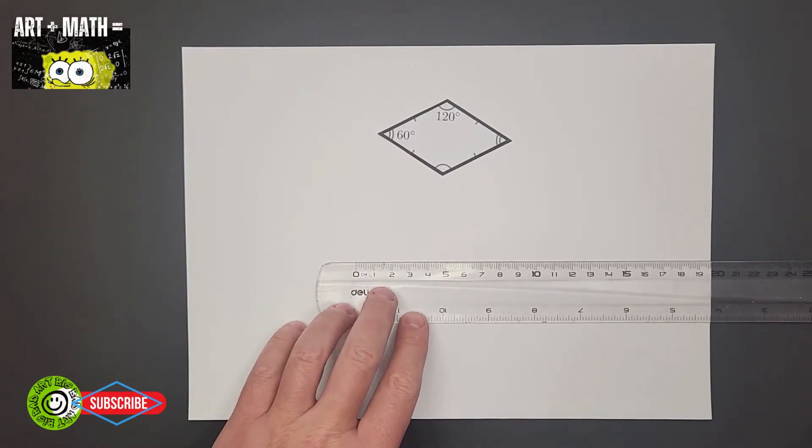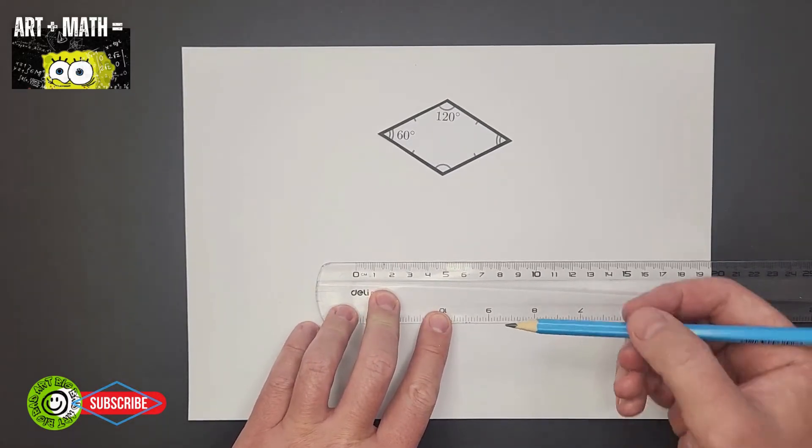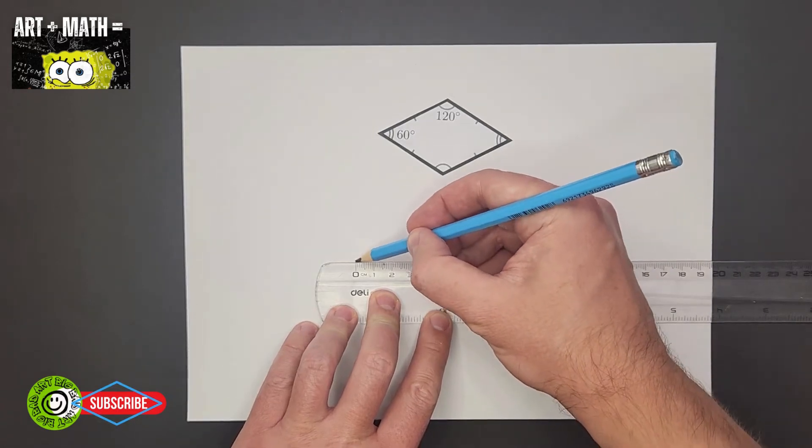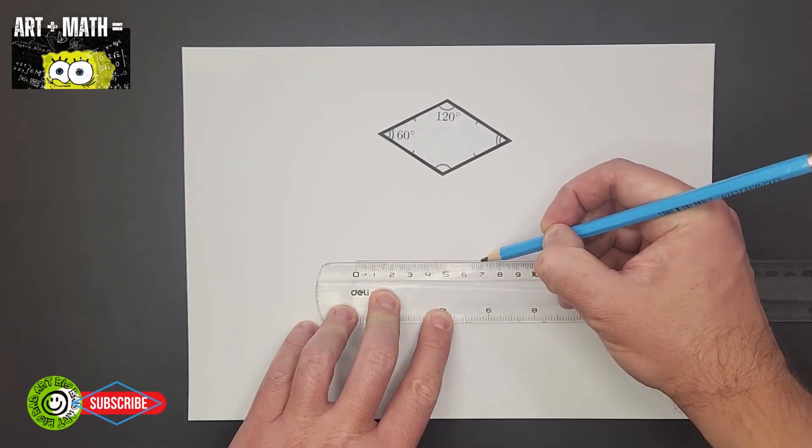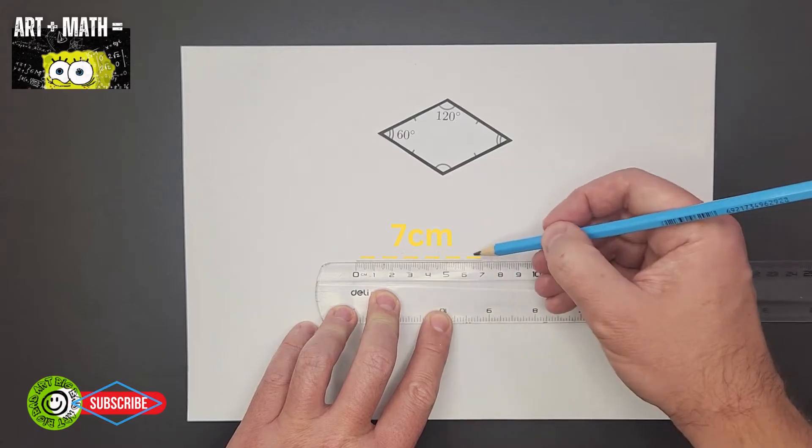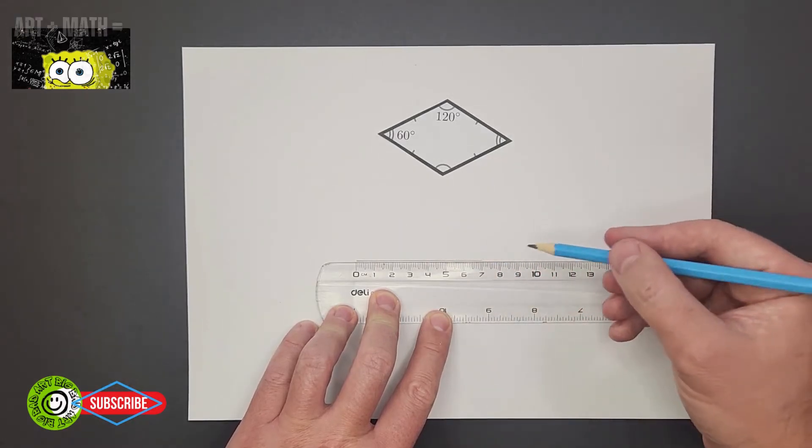You need to draw a line seven centimeters, okay. So zero to seven.